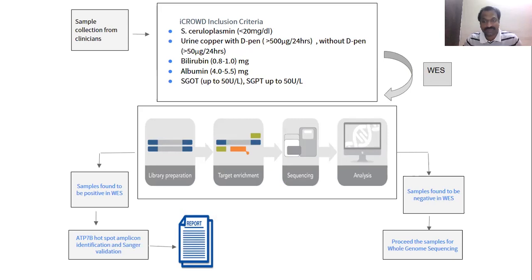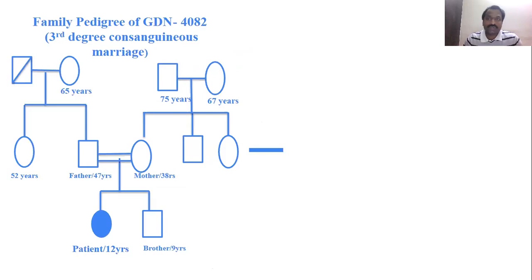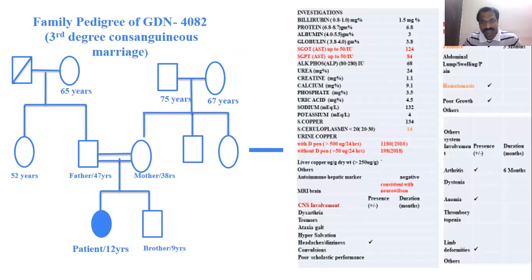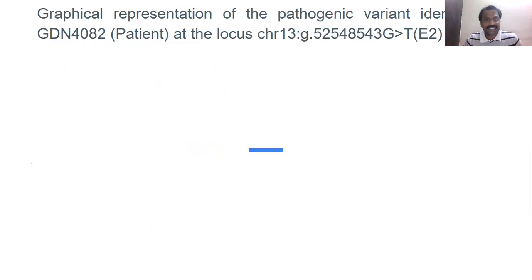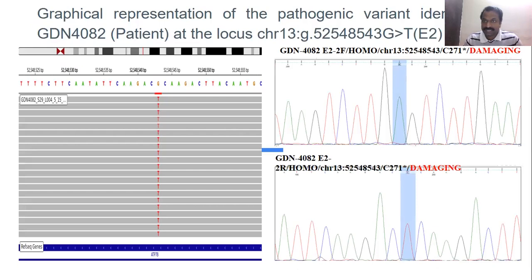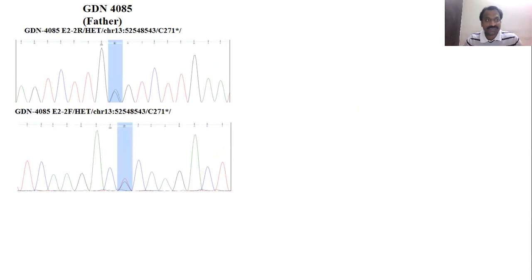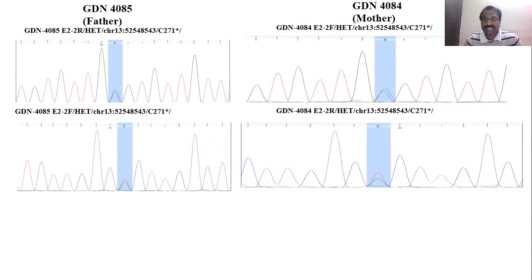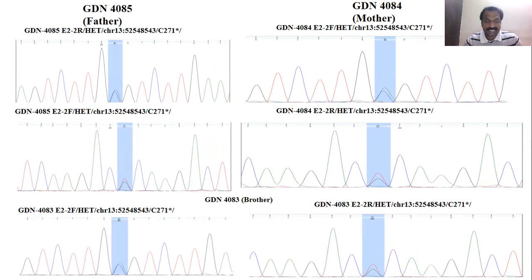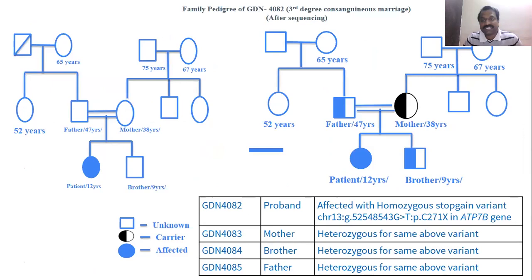I will explain two cases from the consortium. The first patient came to the OPD in the Malabar region, Kerala — a 12-year-old with previous history of high SGPT and SGOT levels, low ceruloplasmin level, and history of jaundice. Whole exome sequencing identified a mutation in exon 2, which was validated by Sanger sequencing. Segregation analysis showed the father is heterozygous, the mother is heterozygous, and the brother is also heterozygous for the same mutation. The proband carries a homozygous stop-gain variant in exon 2, while the mother, father, and brother are all carriers.